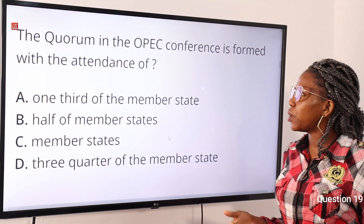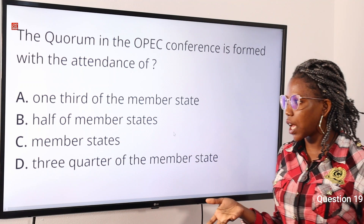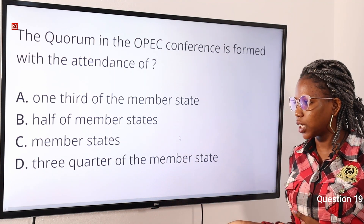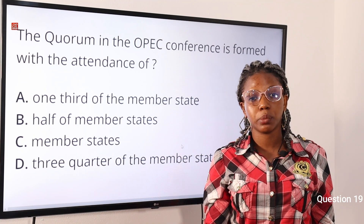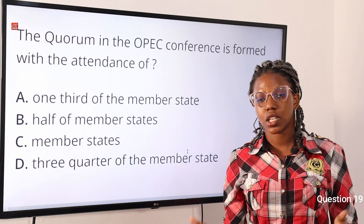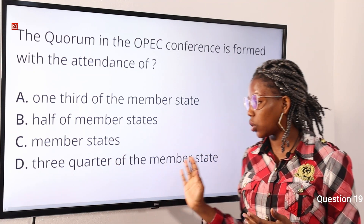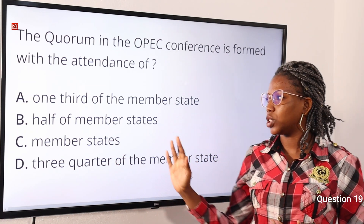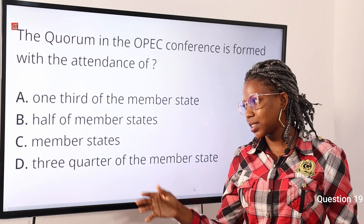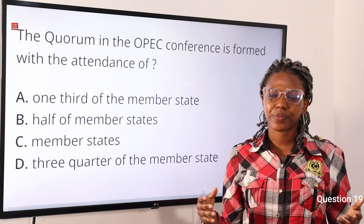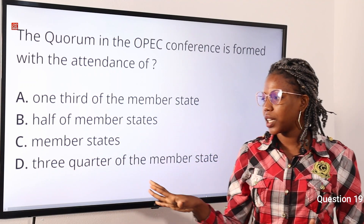Question nineteen: the quorum in the ECOWAS conference is formed with the attendance of — option A: one-third of member states, option B: half of member states, option C: member states, option D: three-quarters of the member states. The answer is option D, three-quarters of the member states. One-third means one out of three parts; half means one out of two parts; option C is ambiguous. Option D is the correct answer.